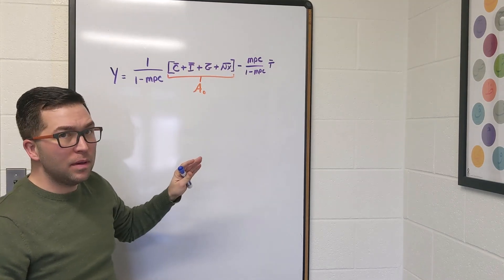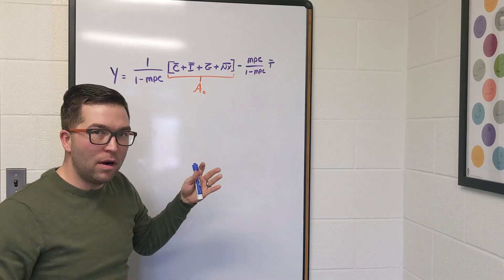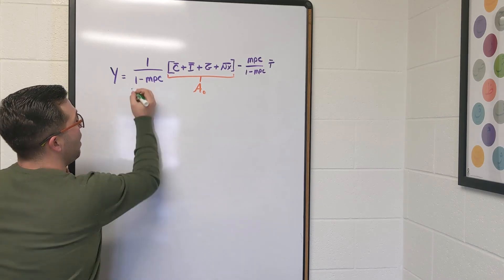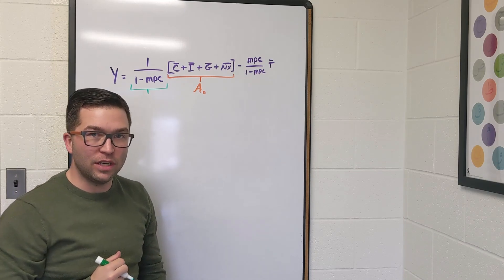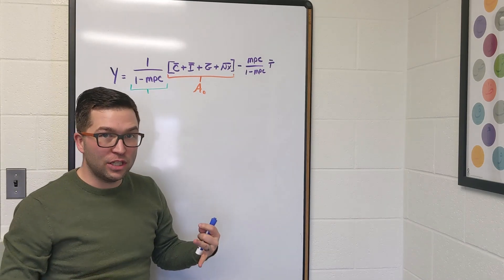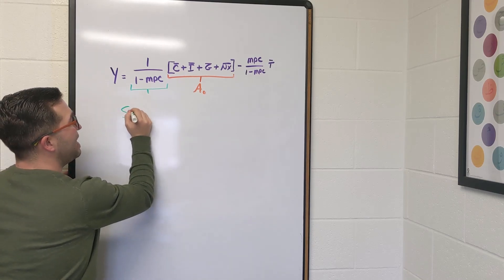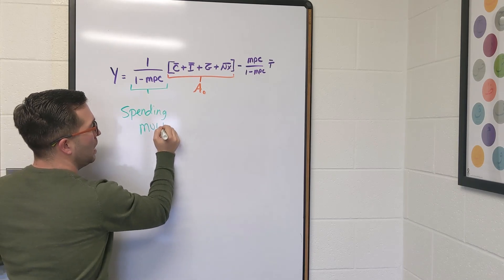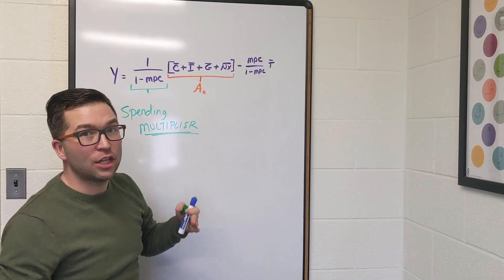But if one of these goes up, GDP is going to go up by more because there's a multiplication of one over one minus MPC. That is our next very important part of this equation. In fact, we're going to have an entire section in this lesson that talks just about this right here. This is going to be called the spending multiplier.